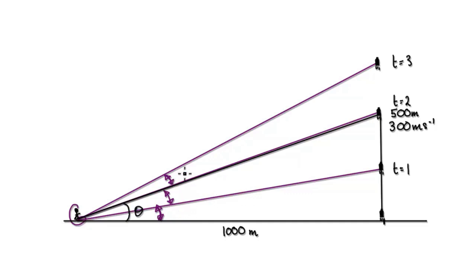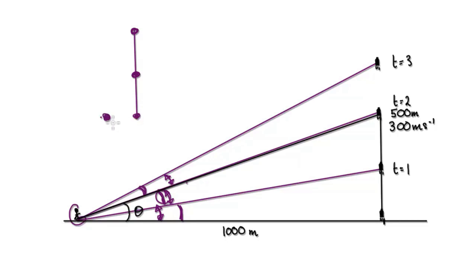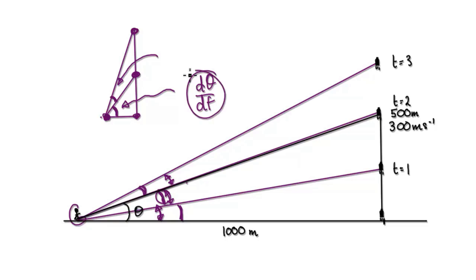Something that you should realise is that in the same period of time, this angle would be bigger than this angle. Let me exaggerate the situation. Let's say one second later the rocket is here, another second later the rocket is here. One second later the camera would have swept away this amount of an angle. Another second later the camera would have swept away this amount of an angle. When I exaggerate the situation, you can clearly see that this angle is much, much bigger than this angle here. So d theta by dt here would be bigger here than it is here.